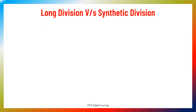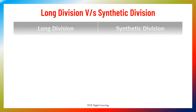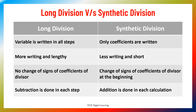Let's see a comparison of long division and synthetic division. In long division, variables are written in all steps, making it more writing and lengthy, with no change of sign of coefficients of the divisor, and subtraction is done in each step. In synthetic division, only coefficients are written, it is less writing and short, the sign of coefficients of the divisor is changed at the beginning, and addition is done in each calculation. So for division of polynomials by monic linear polynomials like x minus alpha, and monic quadratic polynomials like (x minus alpha)(x minus beta), synthetic division is a very convenient tool that directly gives the quotient and remainder.